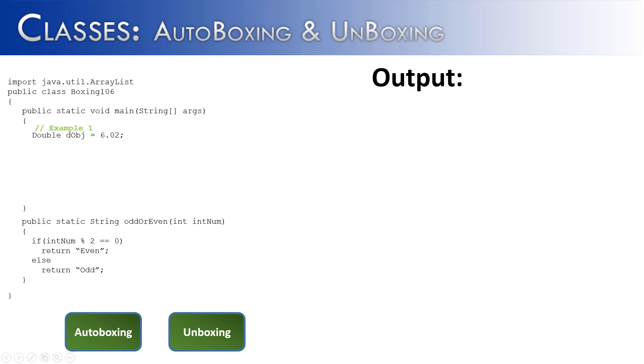So now that we have a pretty good idea about what autoboxing is and what unboxing is, let's look at some examples. In Boxing106, in the first example, I start with a double object called DOBJ which is assigned to a double primitive 6.02. And so this is going to be our first example of autoboxing because 6.02 is going to be automatically wrapped as a double object and stored in DOBJ.